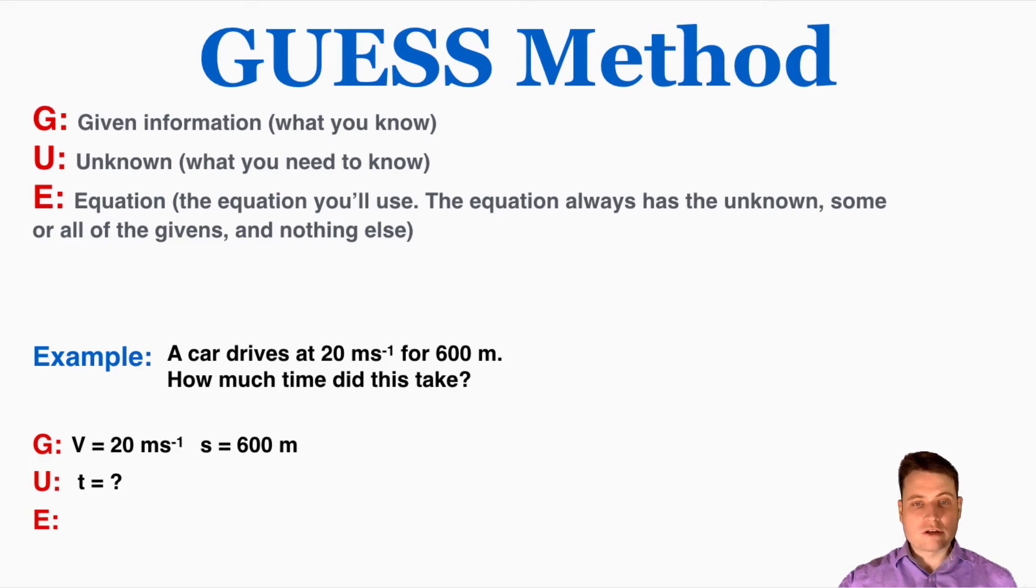And here I remember the equation that connects v, s, and t. Velocity is equal to displacement divided by time, so that is going to be the equation that you use. Again the way that you identify that is to find an equation with your unknown, the things that you know, and nothing else.